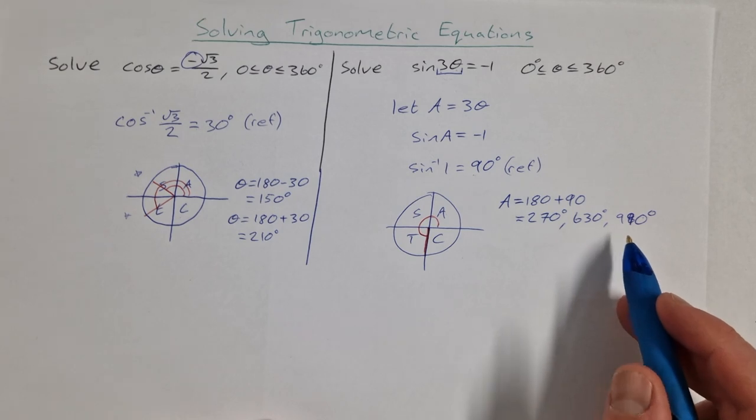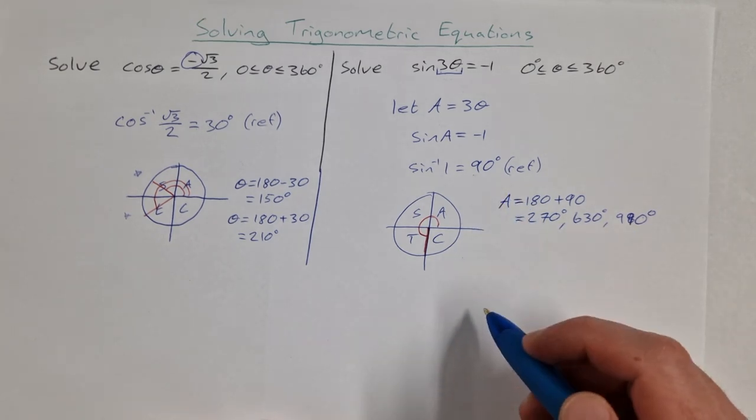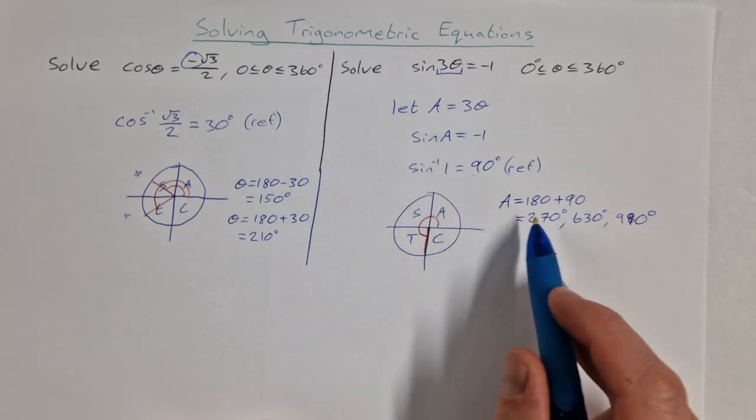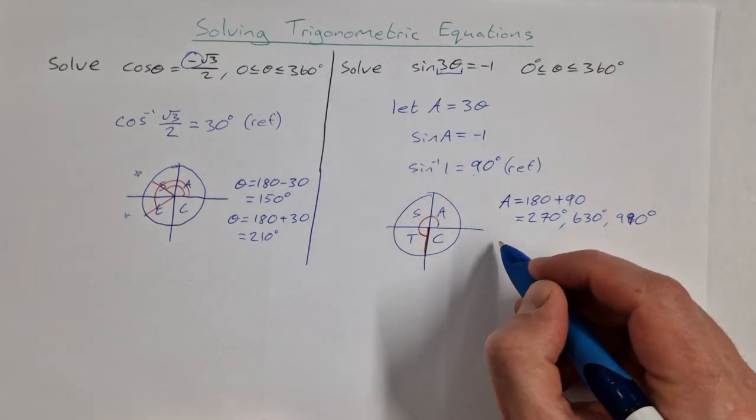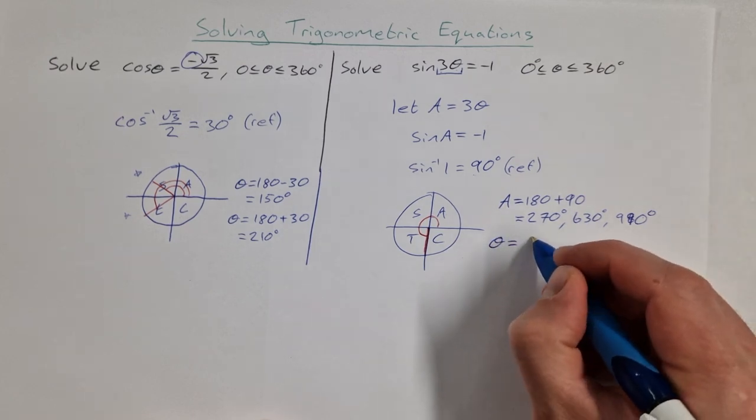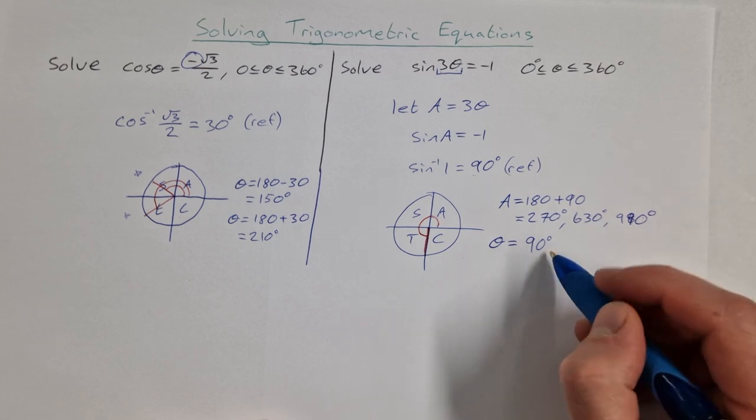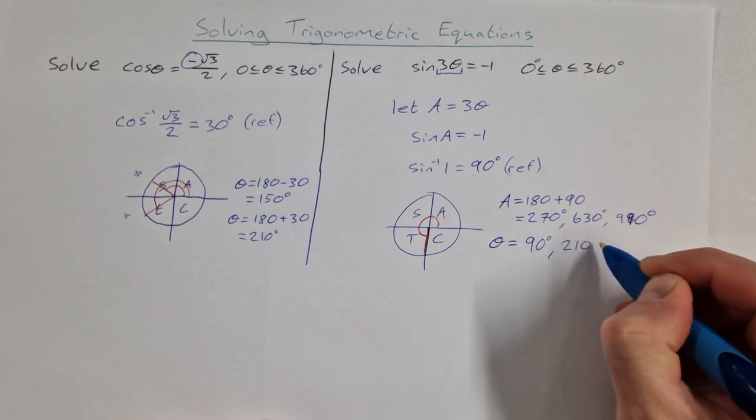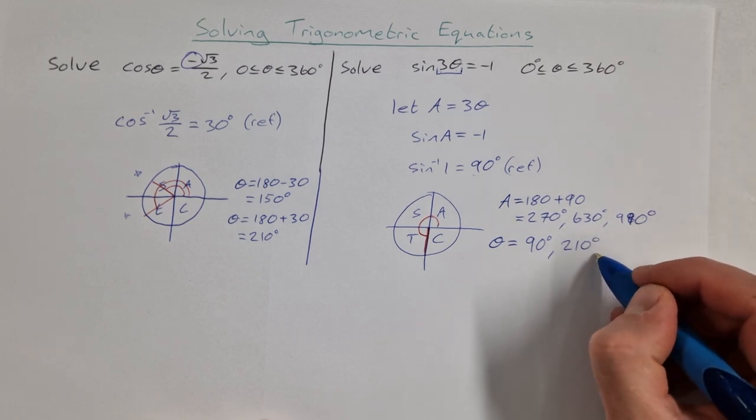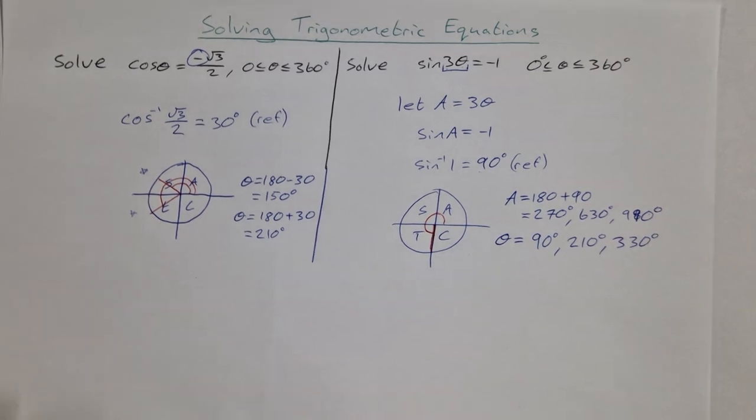Those are our 3 angles for A, our 3 solutions for A. But remember, A was equal to 3 theta, so if you want to get theta, you need to divide the 3 of these by 3. So theta is equal to 270 divided by 3, which is 90 degrees. It's also equal to 630 divided by 3, which is 210 degrees. And then it's equal to 990 divided by 3, which is 330 degrees.